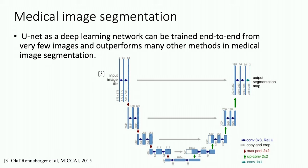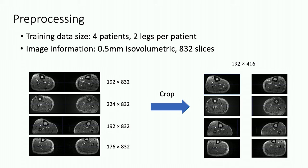Deep learning has shown outstanding performance in image analysis and pattern recognition. For example, U-Net, named after the shape of the network, has been prevalently used as an efficient end-to-end model to do medical image segmentation.